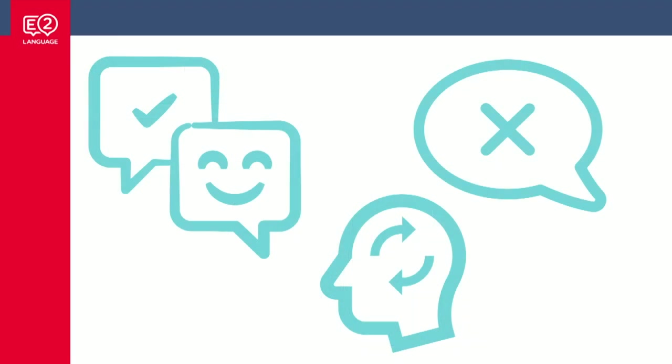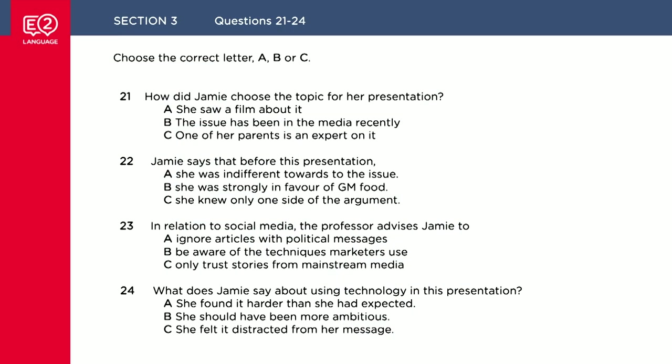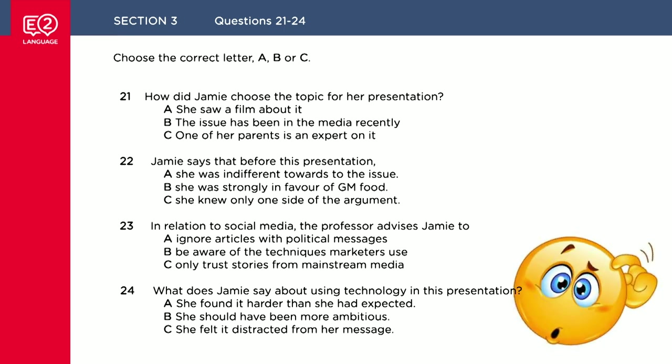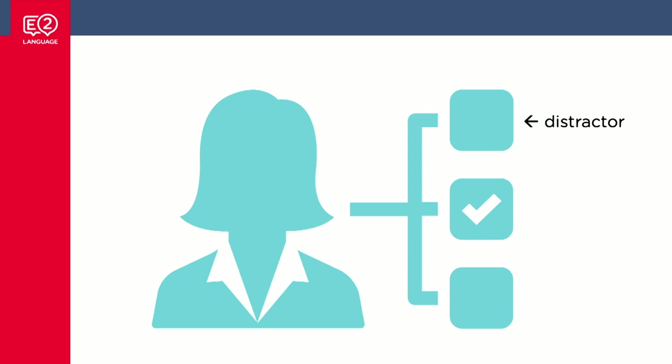One reason they're so tough, particularly in Section 3, is that there is a lot of text to read and not much time to do it. Another factor is that there are three possible options, and even though there's only one correct answer, the speakers will often mention information or say vocabulary from the two incorrect options. So the answer may be B, but you'll hear vocabulary from A and C — and these are called distractors. You've probably heard this word before. What are they? Are they just a cruel trick by IELTS? Not really. Let me explain how they work.